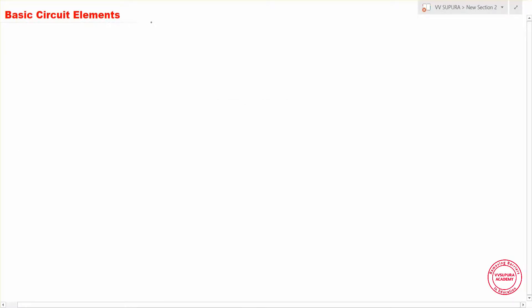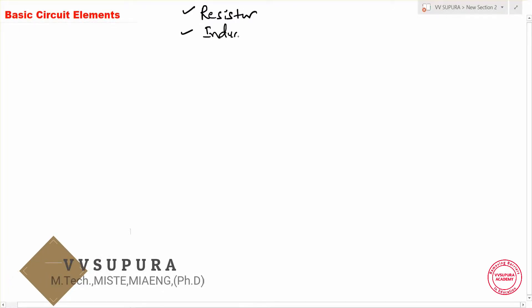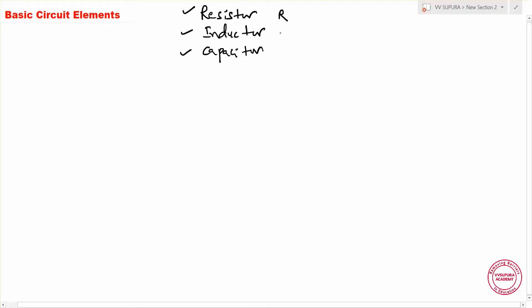Now let's go through the basic circuit elements. The first is the resistor, the second one is the inductor, and the third one is the capacitor. These three are considered the basic circuit elements. The resistor is represented with R, inductor with L, and capacitor with C. The resistor is measured in ohms, the inductor in henrys (H), and the capacitor in farads (F).